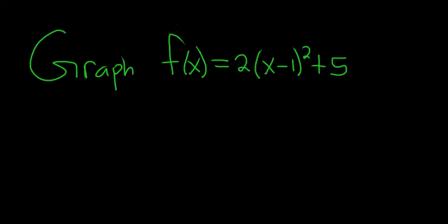Hey everyone, in this problem we have a parabola and it's written in what's called standard form. So recall standard form is f(x) equals a(x-h)² plus k. And so whenever you have a parabola that's written in this way, the vertex of the parabola is h comma k.